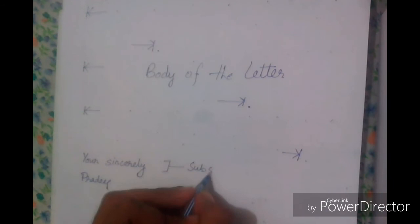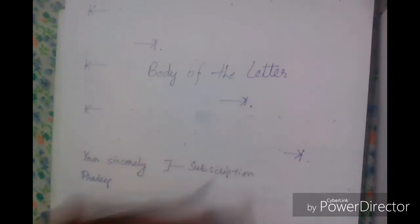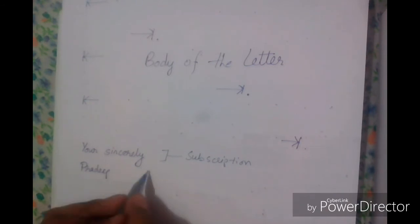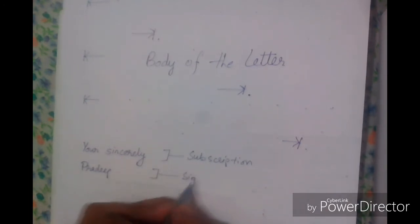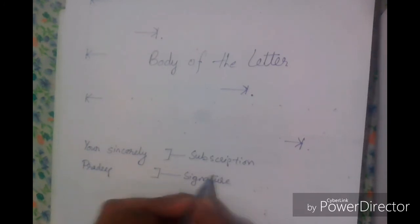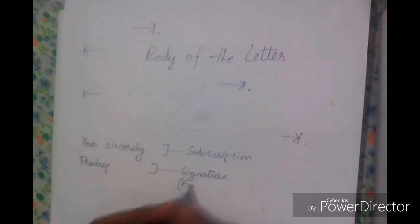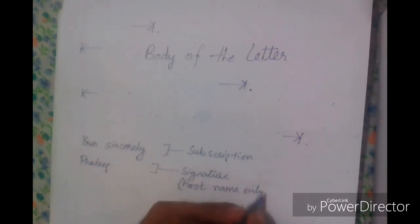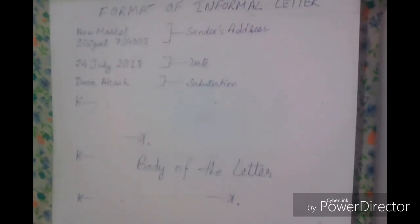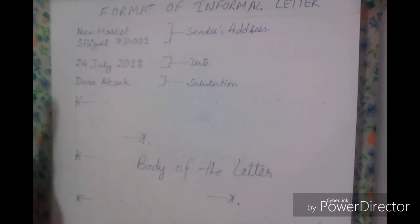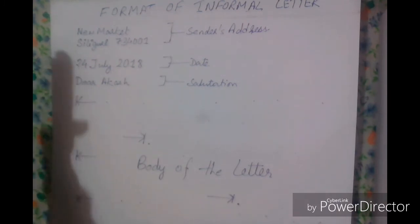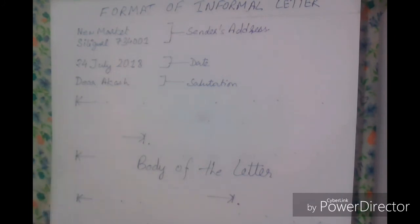The signature contains only your first name. Now note that when you're writing an informal letter you follow block format. While following this format, do not punctuate. For example, 'New Market' has no comma or full stop. In the date, the format is: date, then a space, then month, then year — so '24 July 2018' — no comma, no full stop.